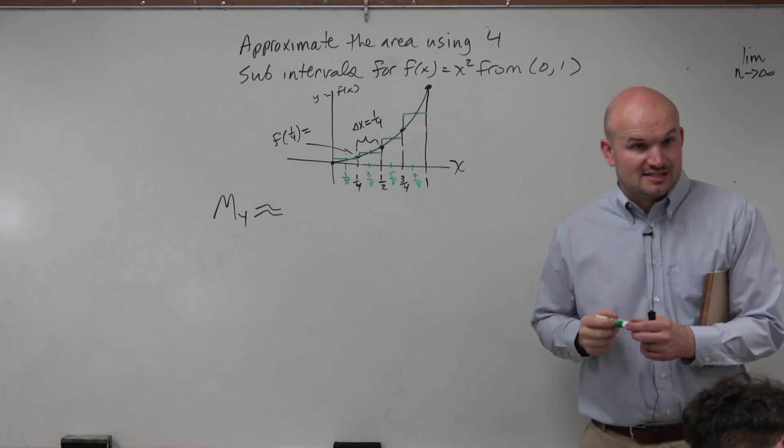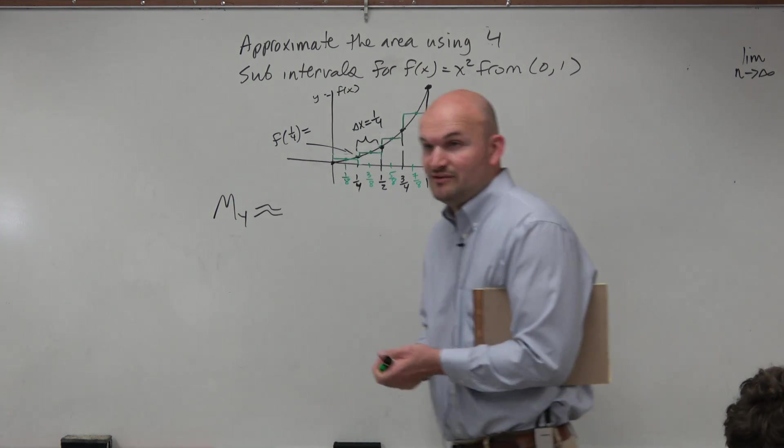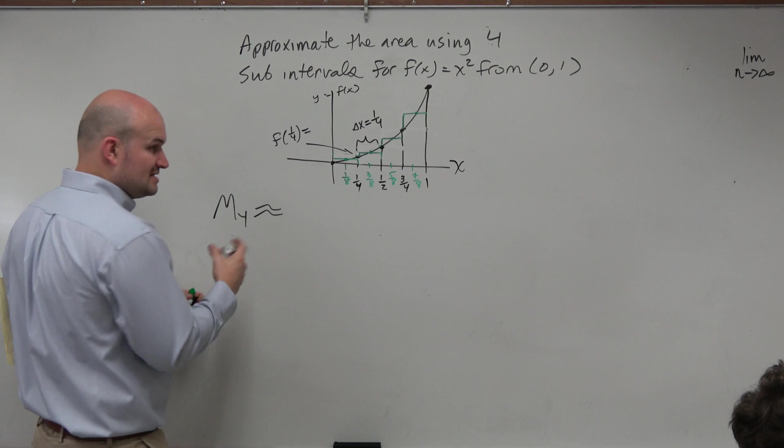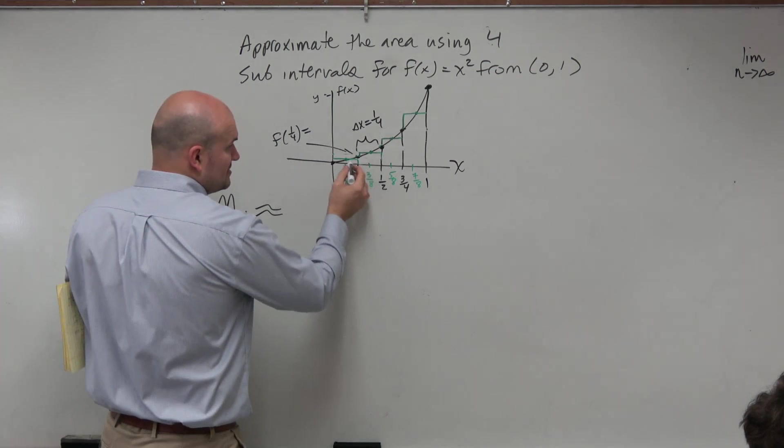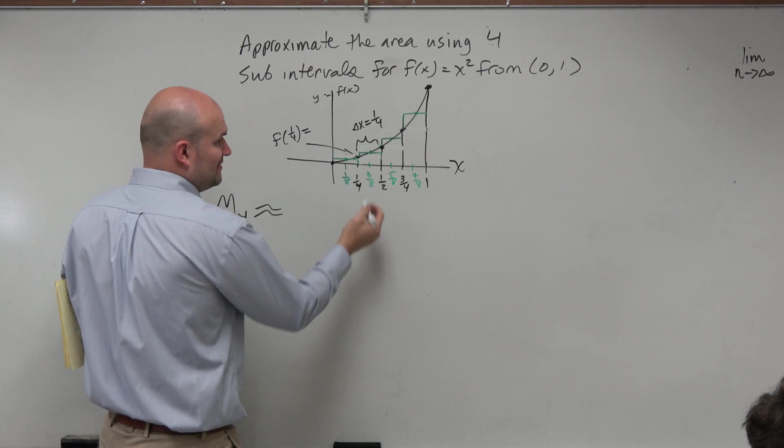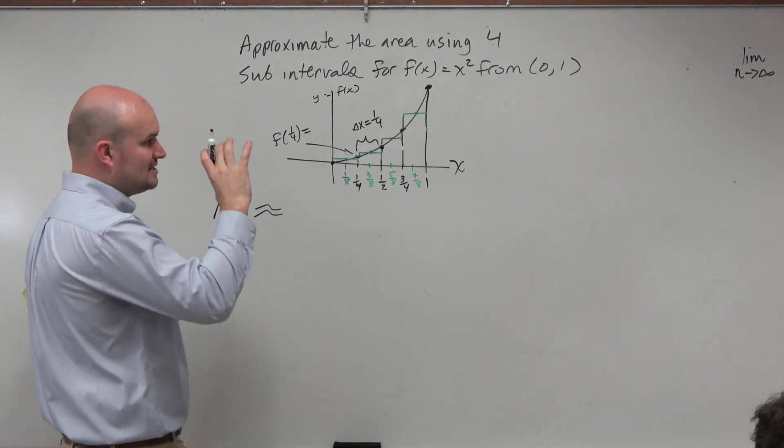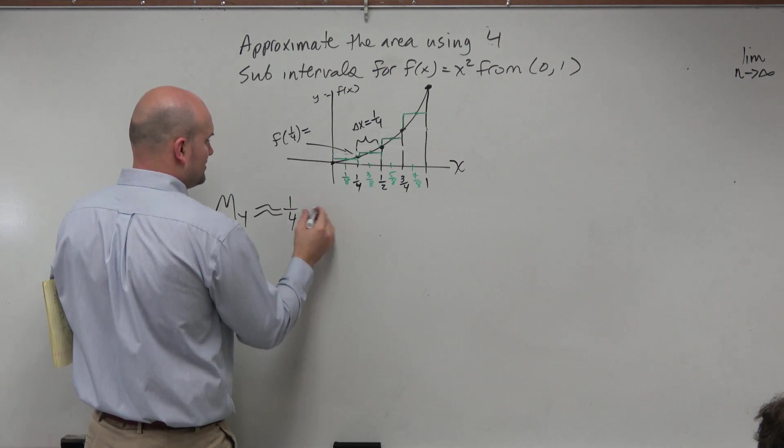Now, is delta x still the same? Yes. The delta x is still the same. So we can factor out the 1/4th, because the difference between the distance of each of these rectangles is still 1/4th. But now, the only difference is our height is now different. So we can factor out the 1/4th.